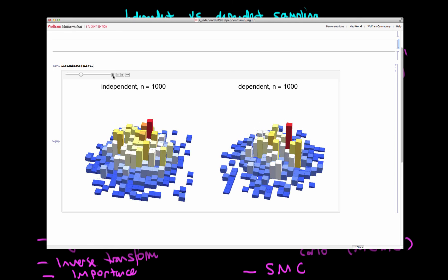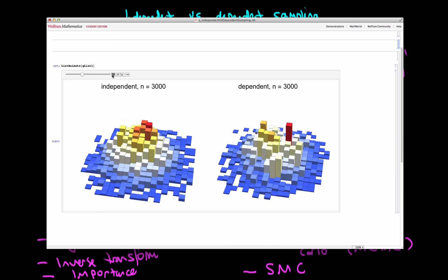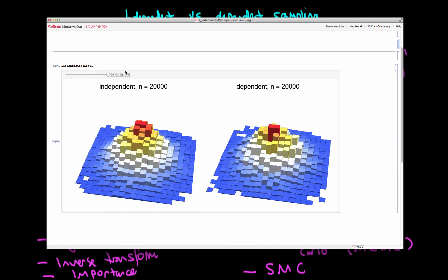We can see here that after we have 20,000 iterations from both of these algorithms, the independent sampling distribution is that much more indicative of a two-dimensional normal than is this rather noisy landscape that we see in the dependent sampling algorithm.